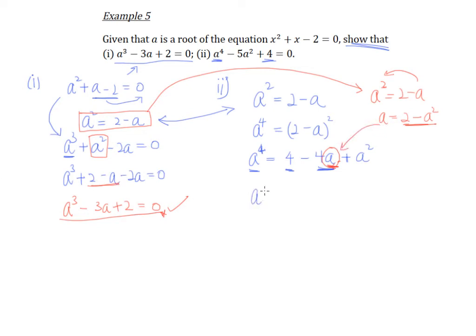Okay, so we have a power of 4 on the left. And on the right, we have 4 minus 4 multiplied by 2 minus a squared plus a squared. So if we were to open up the bracket, we end up with 4 minus 8 plus 4 a squared plus a squared. And of course, if we were to simplify this, we end up with negative 4 plus 5 a squared.